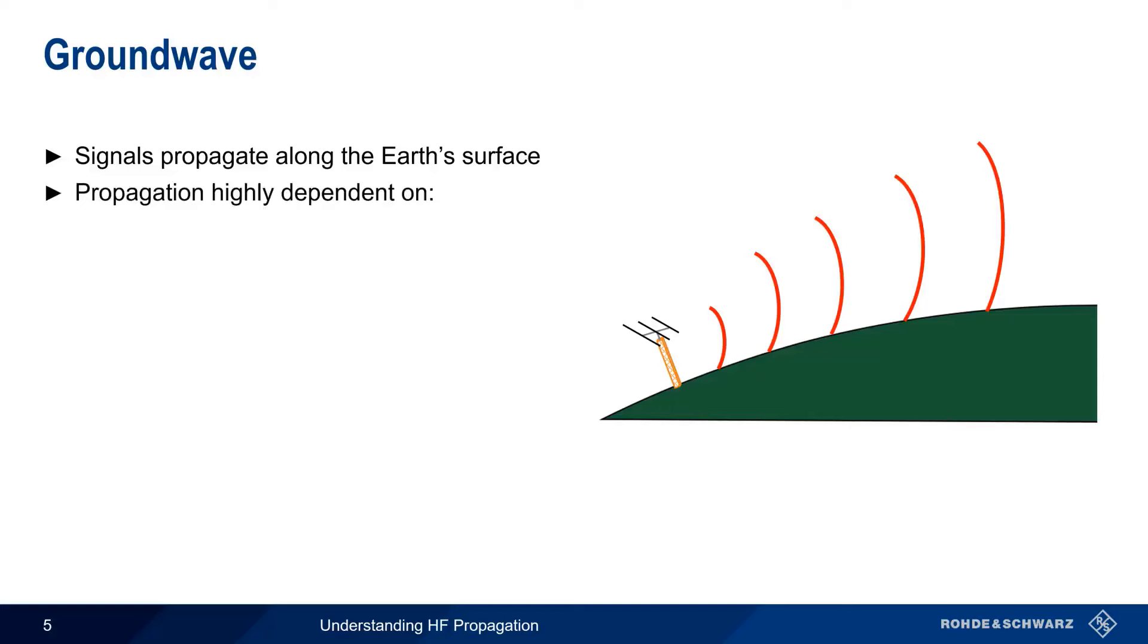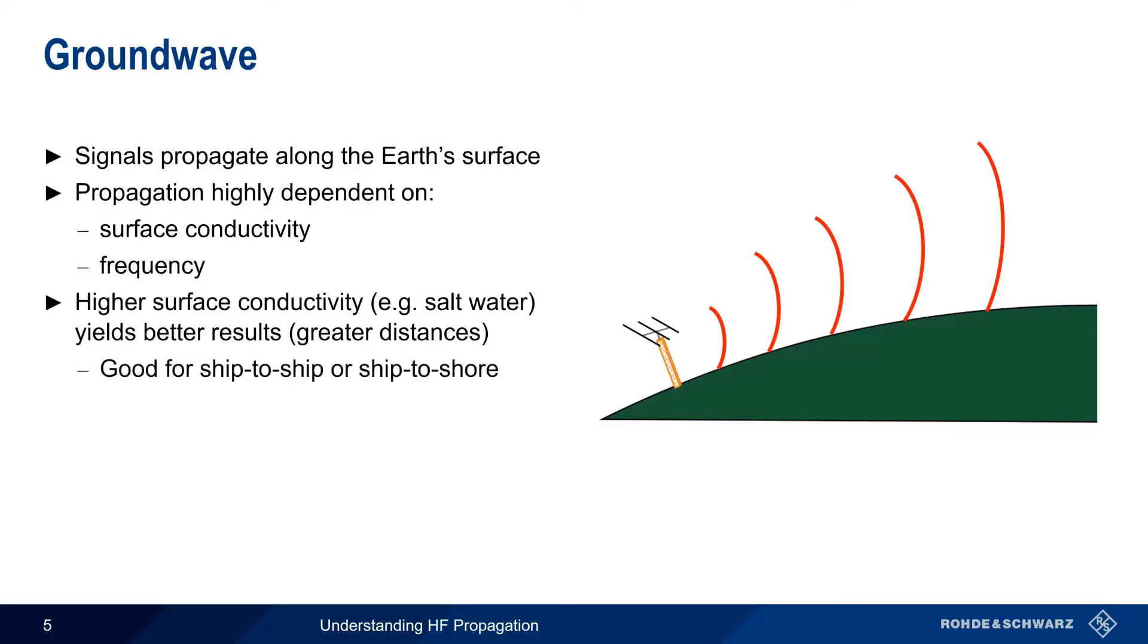Ground Wave propagation is, however, highly dependent on two different factors: the conductivity of the surface and the frequency of the transmitted signal. In general, higher surface conductivity gives better results, in the form of greater distances that can be covered. Salt water has excellent conductivity, especially compared to dry or rocky land, so Ground Wave is a good choice for ship-to-ship or ship-to-shore communications.